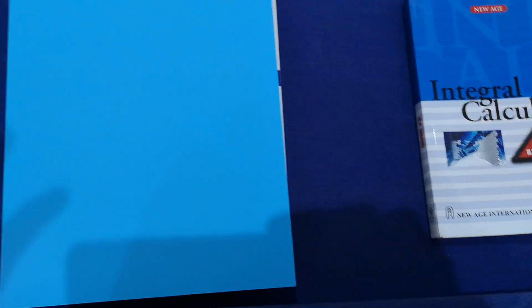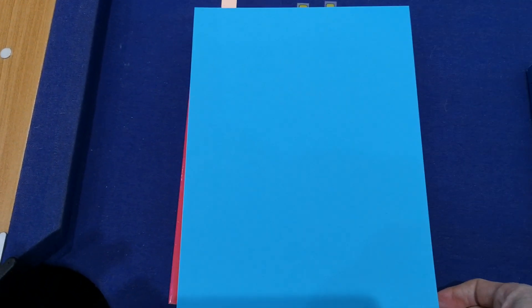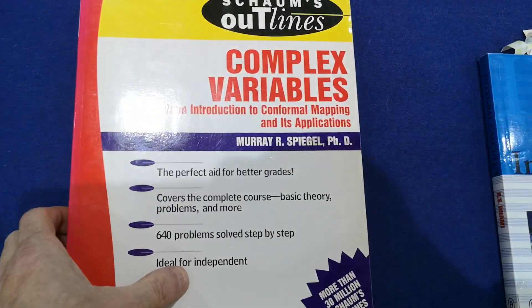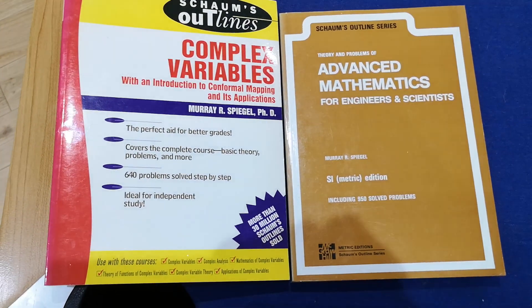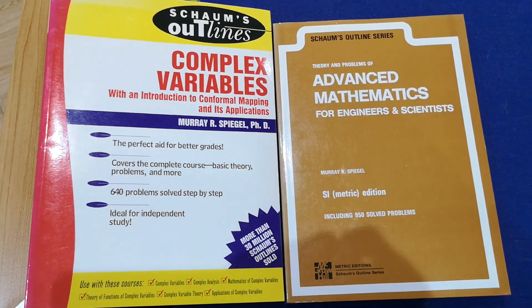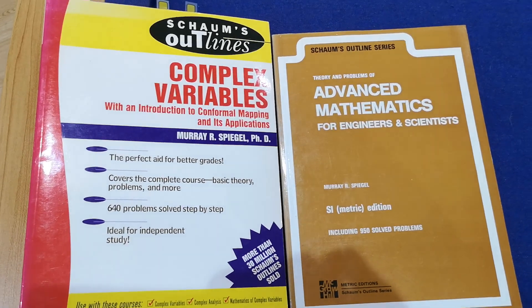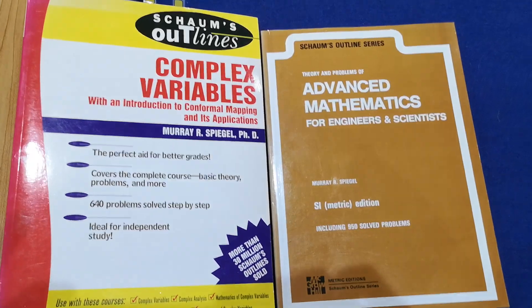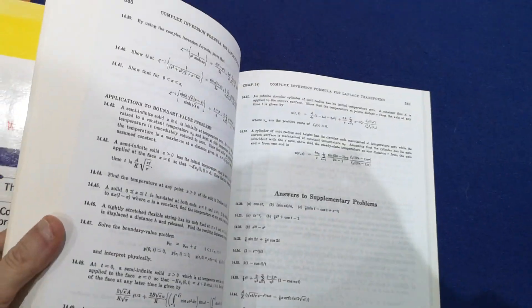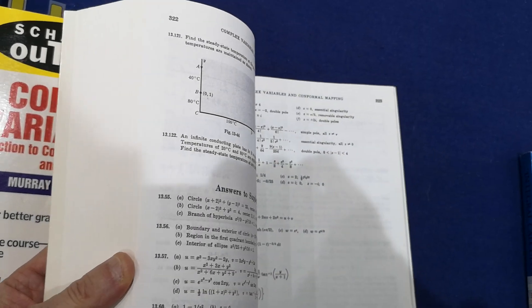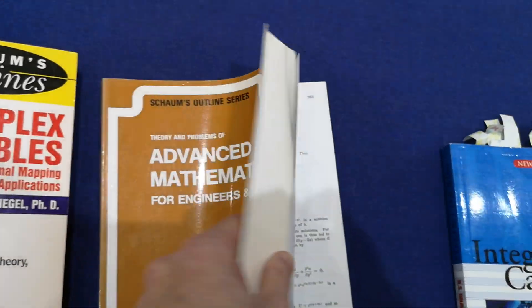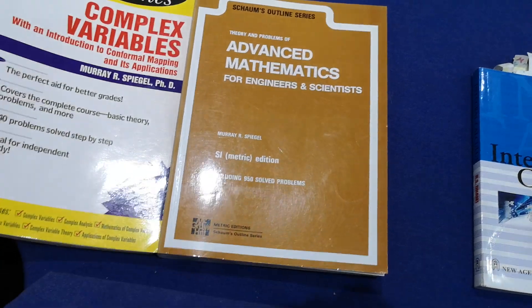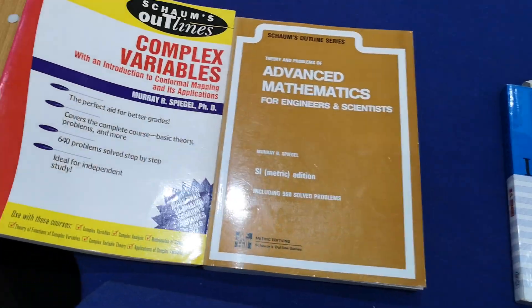The next two, I know what they are. The Schaum outline series are absolutely amazing. I had difficulty picking a couple of titles, and the two that I picked are both written by a legend, Mary Spiegel. I have picked the advanced mathematics for engineers and scientists, and the complex variables. I have probably about 20 books on mathematics. These books are very dark. They're not colorful at all, but they have absolutely a huge number of examples.